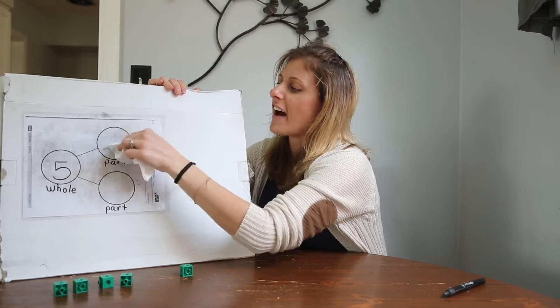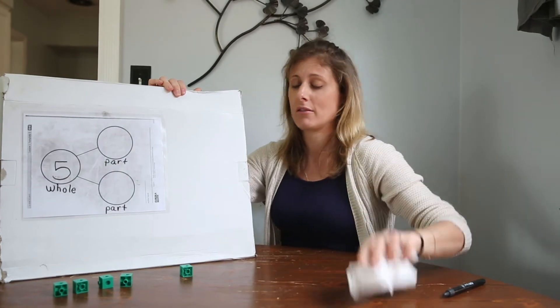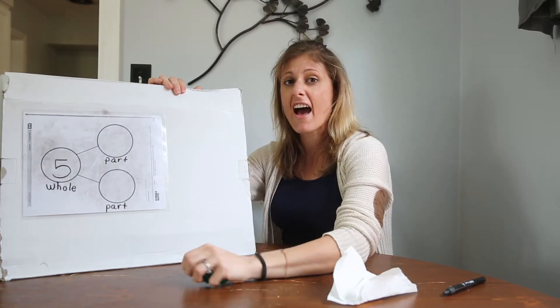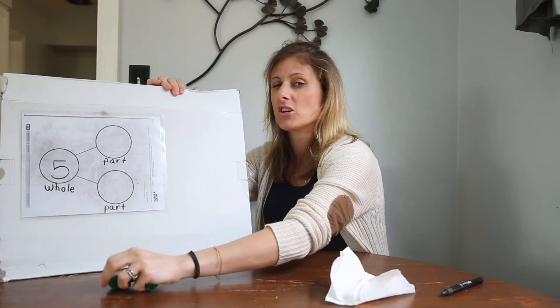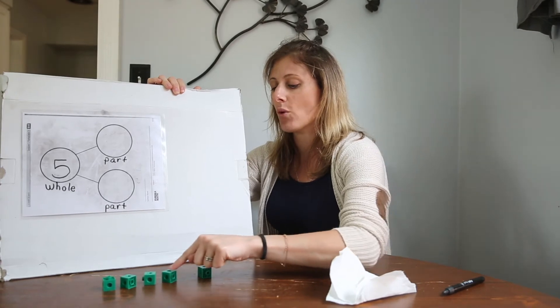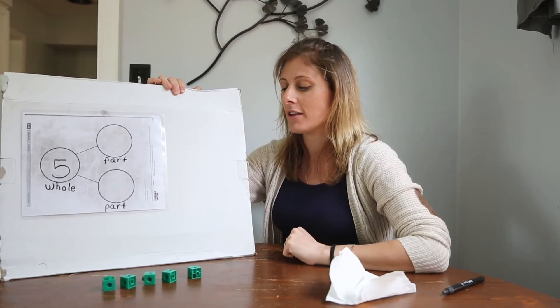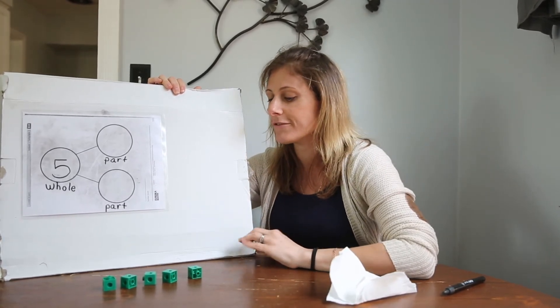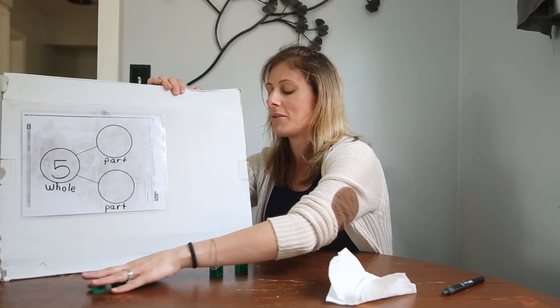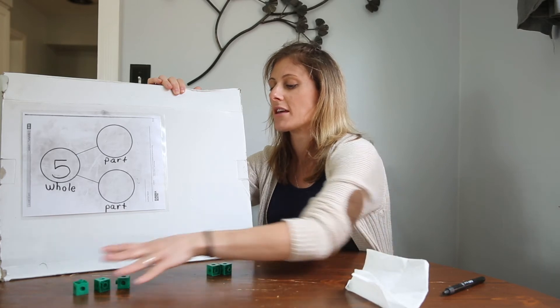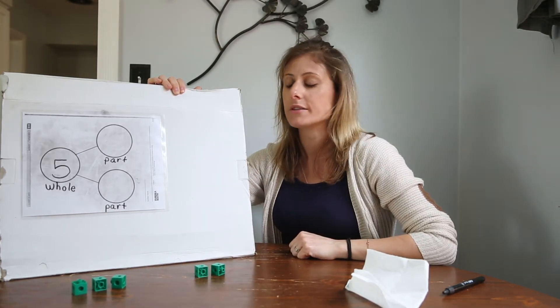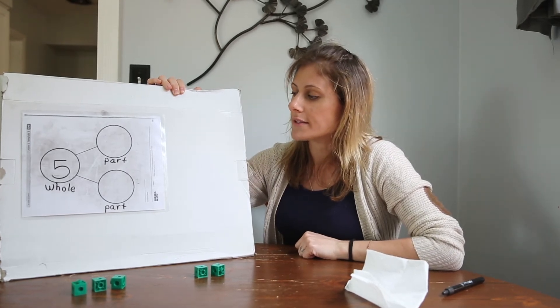We're gonna do five one more time. Okay, so I'm gonna stay with five cubes. Let's count them to make sure there's still five. One, two, three, four, five. Now I'm gonna make two different parts. I'm going to make, do it like this. Let's break them up. Break the number five up into two different parts.